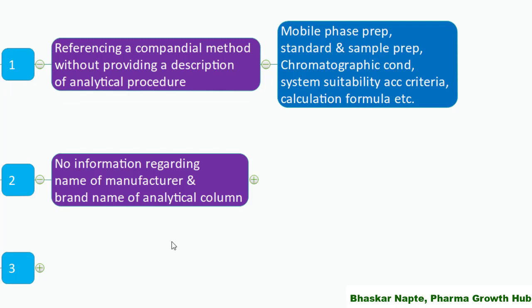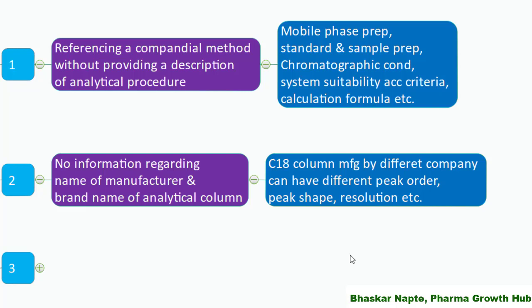The second important point is: no information regarding the name of the manufacturer and brand name of the analytical column. USP might have given the usage of an L1 stationary phase, but in the L1 category you will find thousands of column manufacturers. In liquid chromatography, the performance of the column will vary from one manufacturer to another, so it is very important not to just mention C18 or L1 stationary phase but also mention the manufacturer and column brand name, because different brands can have different peak order.